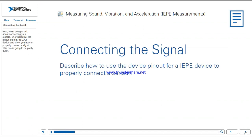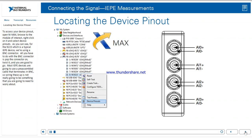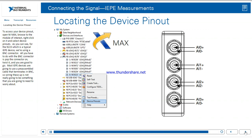Next, we're going to talk about connecting your signals — we'll look at the pinout of an IEPE DAQ device and show you how to properly connect a signal. To access your device pinout, open NI MAX, browse to the module of interest, right-click on it, and select Device Pinouts. For the 9234, which is a typical IEPE device, we're using a BNC connector. All you have to do with a BNC connector is pop it on, twist it, and you're good to go. Most IEPE devices are going to use a preassembled cable that terminates in BNC, so wiring these up is not really something you need to worry about.